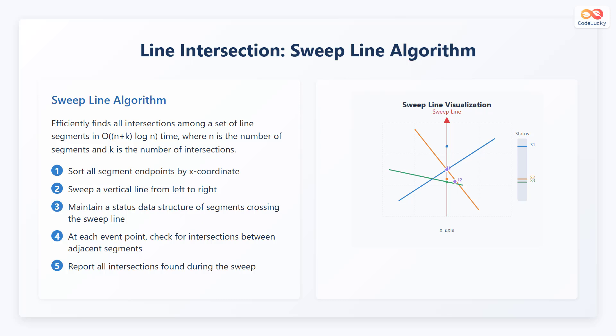Now let's discuss the sweep line algorithm, which is an efficient algorithm used to find all intersections among a set of line segments. It operates in O(N + K log N) time, where N is the number of segments and K is the number of intersections.